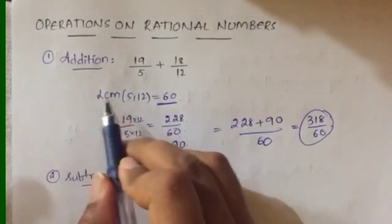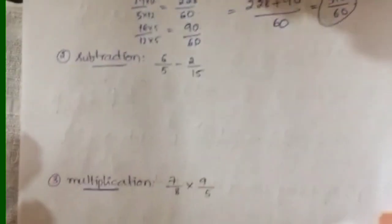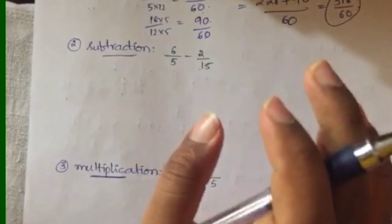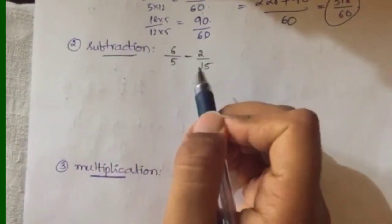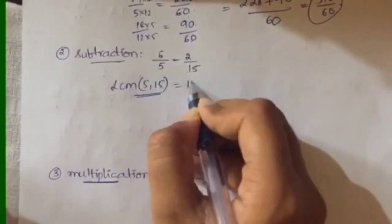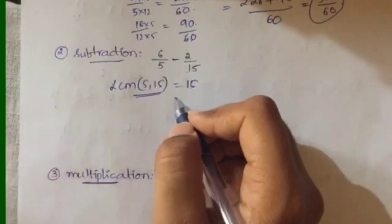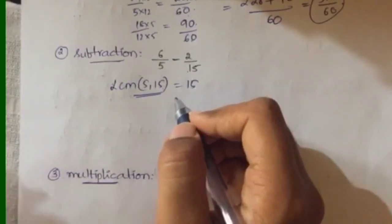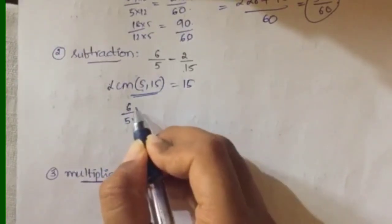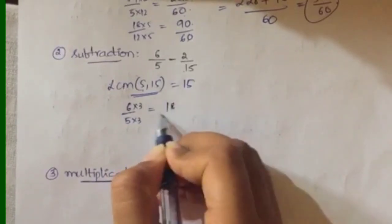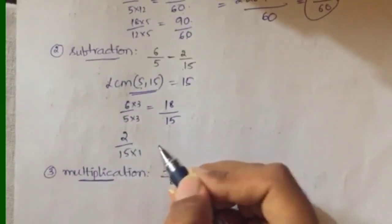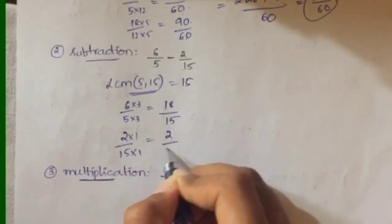Denominators can be made the same by taking the LCM of the denominators. Next is subtraction. For subtraction you have 6/5 and 2/15. You follow the same process as addition, but you subtract the numerators instead of adding. First take the LCM of the denominators — LCM of 5 and 15 is 15. For 6/5, multiply by 3 to get 15, so multiply 6 by 3 as well, giving 18/15.